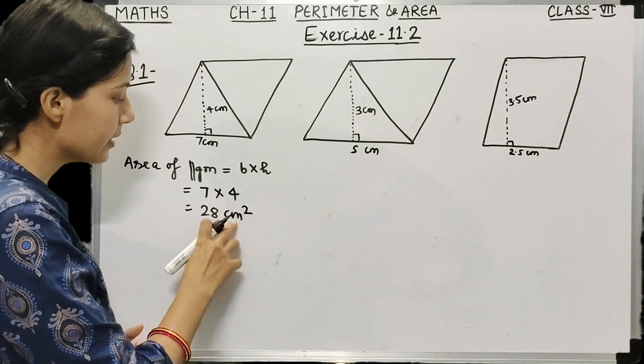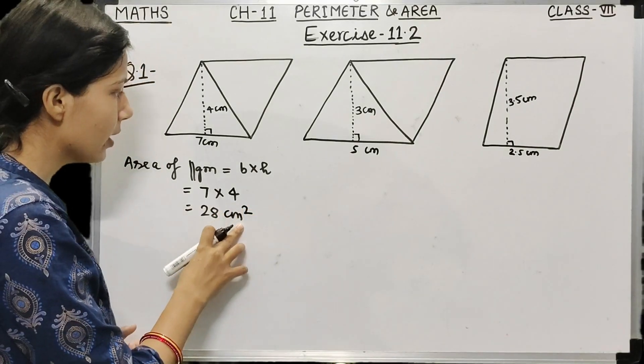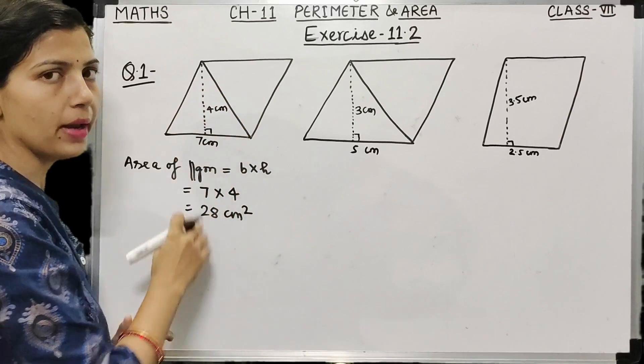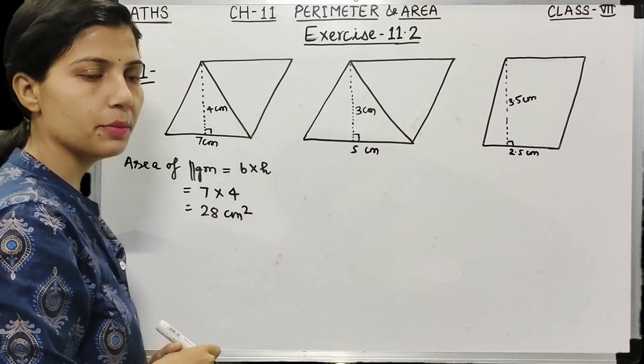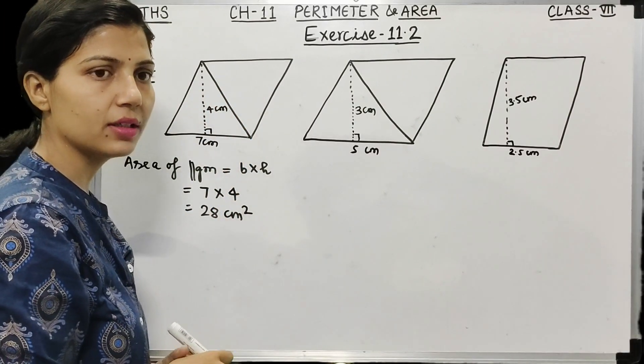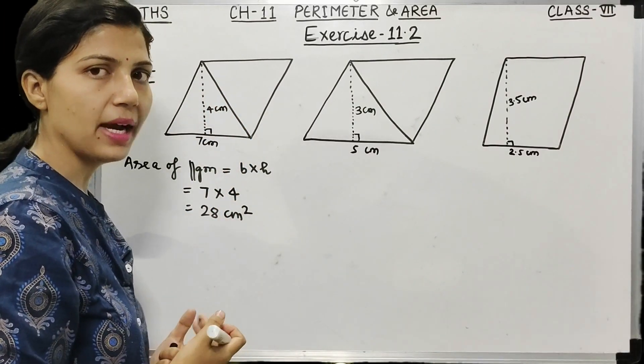28 cm² is the area of this parallelogram. Whenever we find the area of a parallelogram, we use base into height.